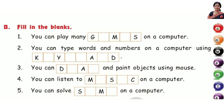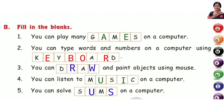Fill in the blanks. Number 1: You can play many games on a computer. Number 2: You can type words and numbers on a computer using keyboard. Number 3: You can draw and paint objects using mouse. Number 4: You can listen to music on a computer. Number 5: You can solve sums on a computer.